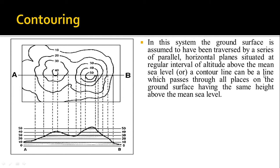There is also another definition: a contour line is a line which passes through all the places on the ground surface having the same height above the main sea level. So if you trace a single line, everywhere it goes all places will have the same height — for example, the 10-meter contour.